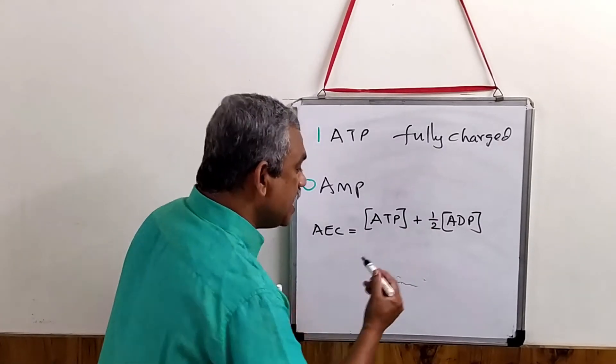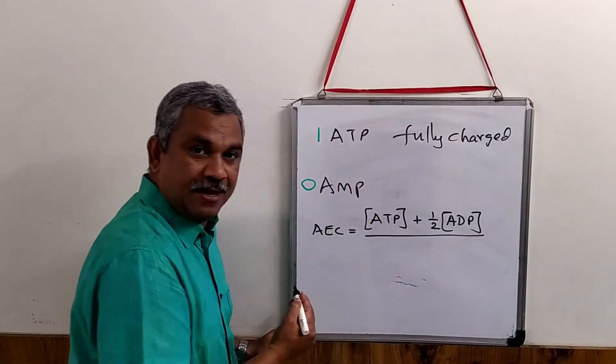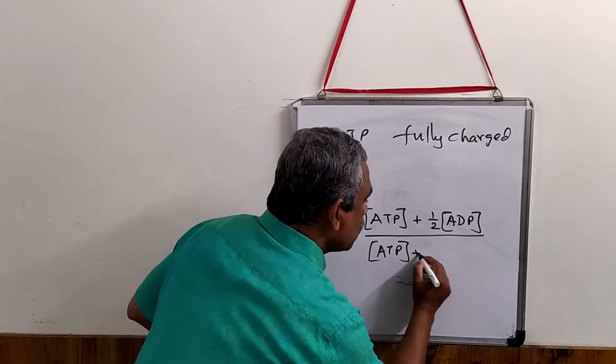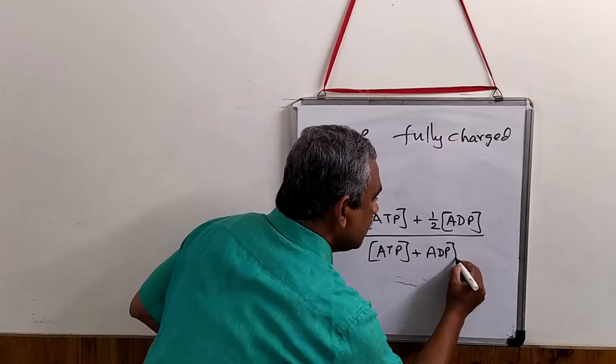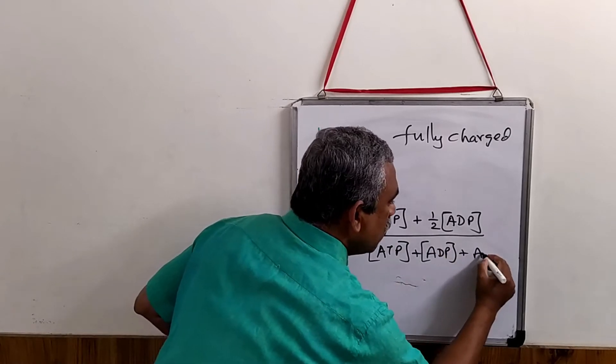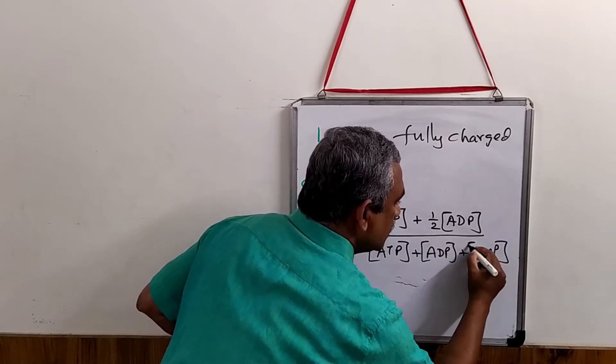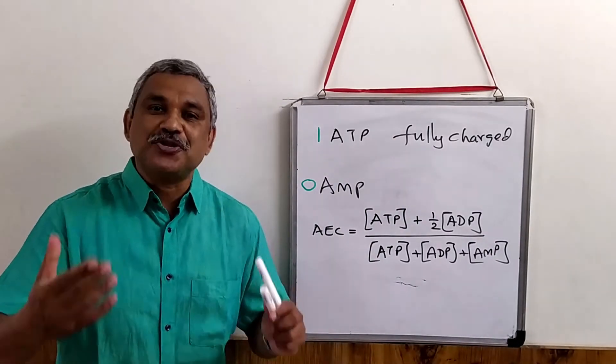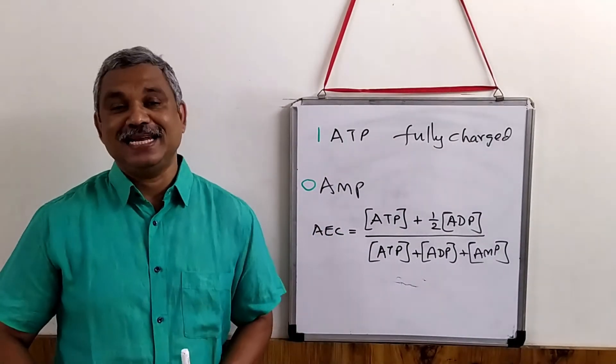So therefore, half ADP divided by concentration of ATP plus the concentration of ADP plus the concentration of AMP. So this is the formula that is used in order to explain the adenylate energy charge.